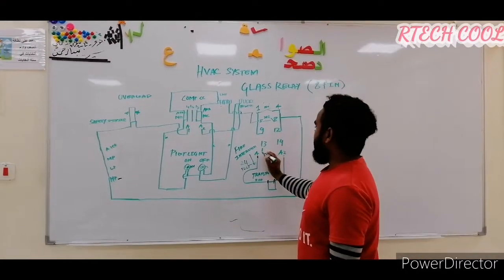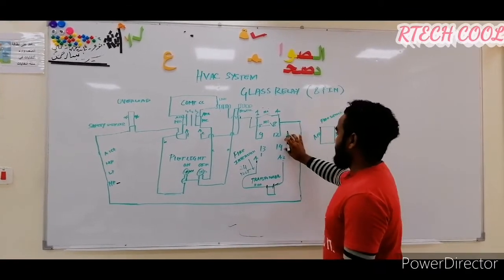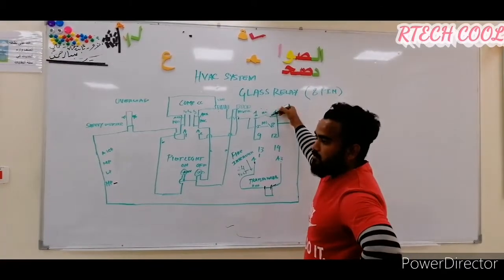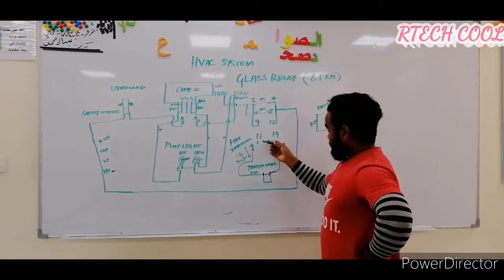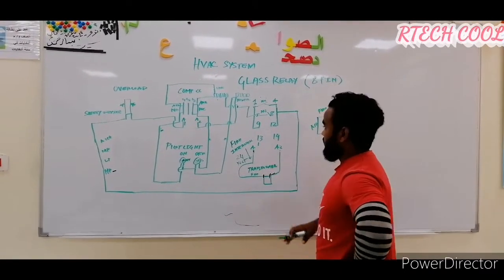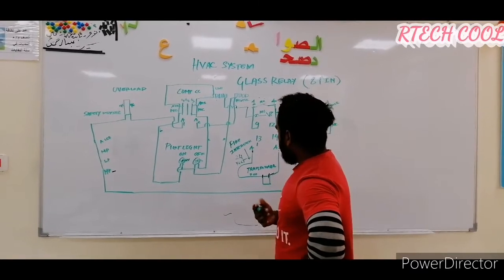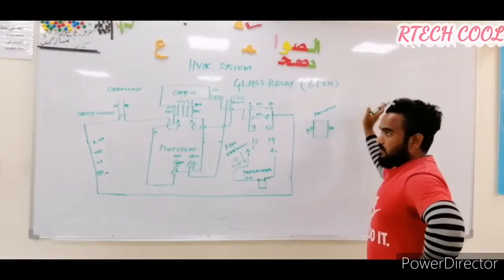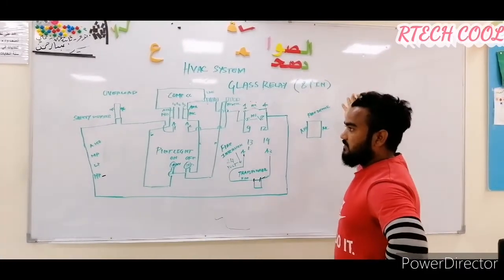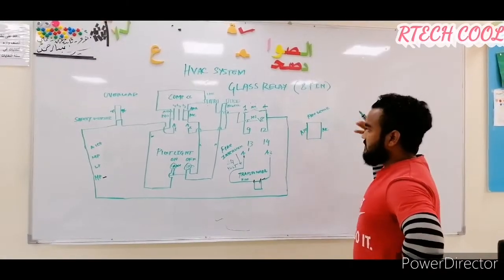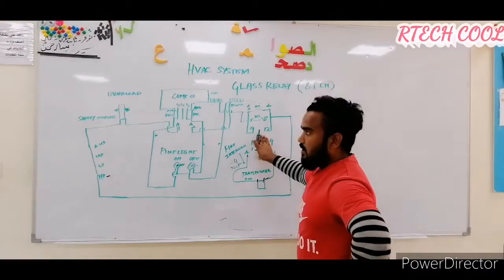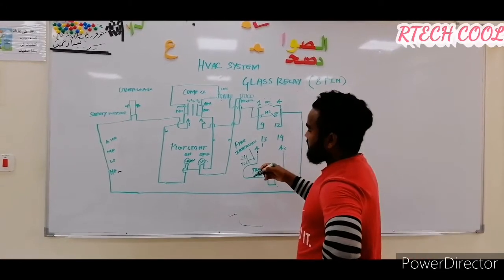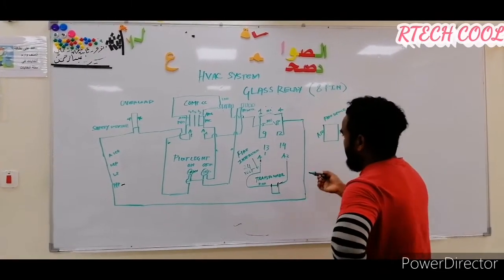We put line on A1 and neutral on A2. If we put power here, the NC will open and the NO will become NC. Before explaining the wiring, I want to share about the fire interlock. If there is a fire inside the feeding area — inside a mall, a complex — wherever our unit is feeding inside a building, there is fire, it will stop our unit. That's why we are using the fire interlock.